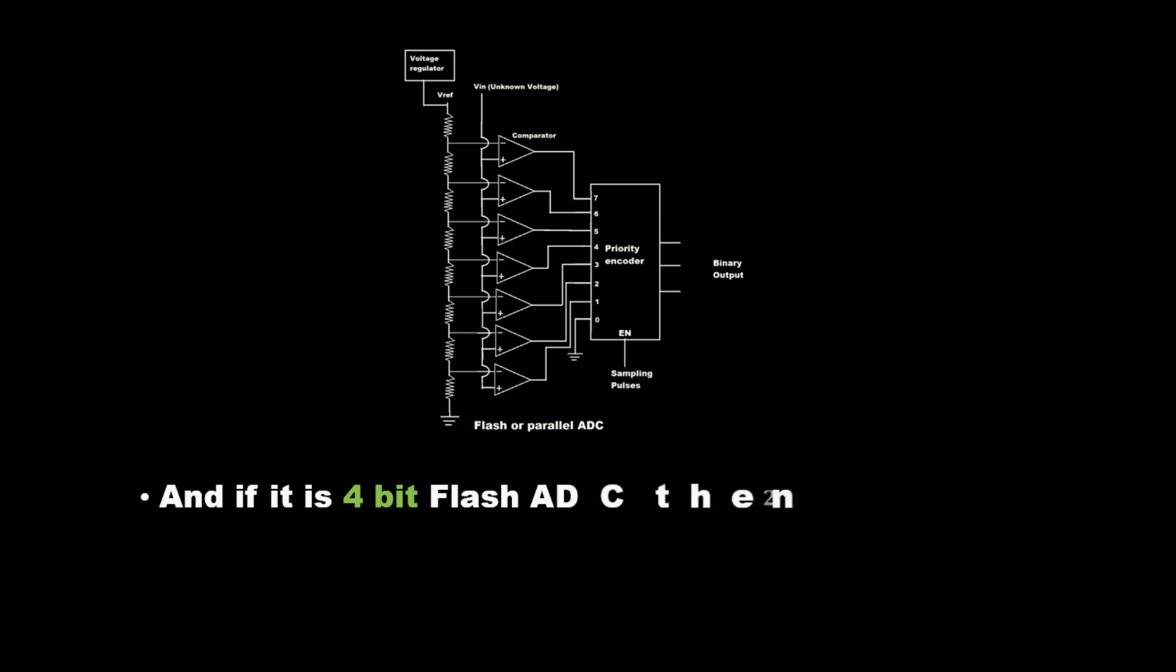And if it is a 4-bit Flash ADC, then 2^4 = 16 resistors and 2^4 - 1 = 15 comparators are required.